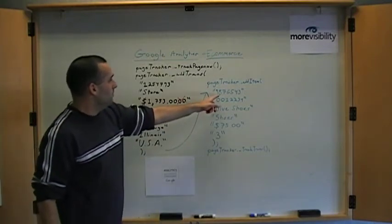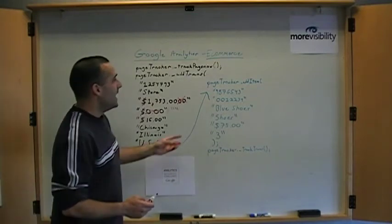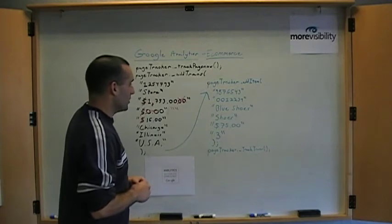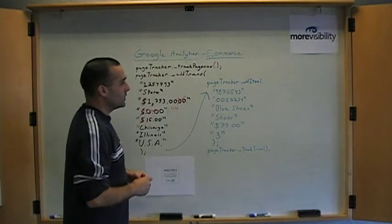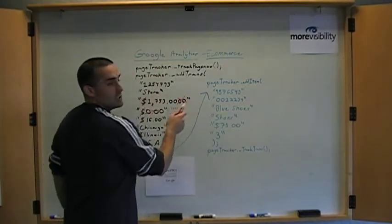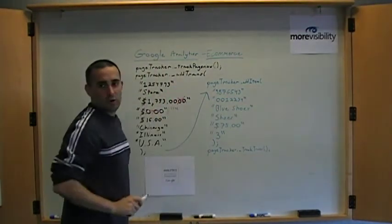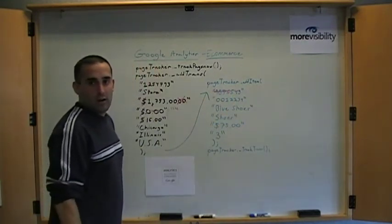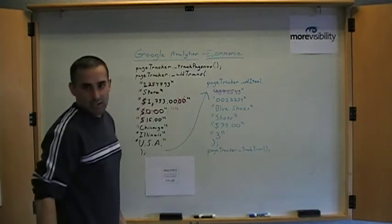Moving on to the bottom part of the code, I had to move it over here because we only have so much room on this board, is the add item part of the Google Analytics transaction, the e-commerce transactions. One thing that I see right off the bat here, and it happens quite frequently unfortunately, is the order ID here and here do not match. The order ID in both your add item call and your add trans call need to be exactly the same. If you're using a different order ID right there, get rid of that. Make sure it's exactly the same that it appears here in the add trans field.